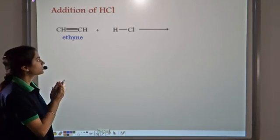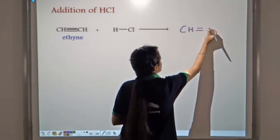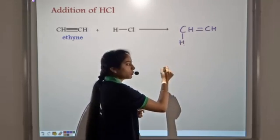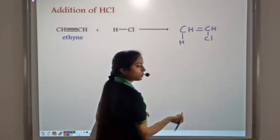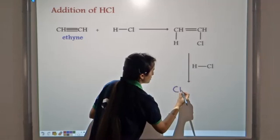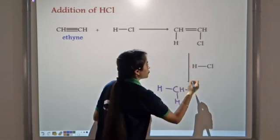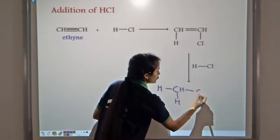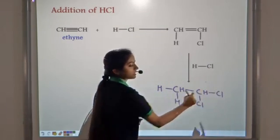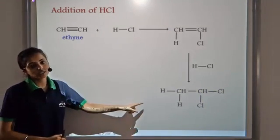Let's take the addition of HCl to ethyne. In the first step, the triple bond changes into a double bond: the H of HCl attaches to one carbon atom and the Cl attaches to the other. When this intermediate is made to react with HCl again, the H of HCl attaches to the carbon atom in the second step. So in two steps the triple bond breaks into a single bond.